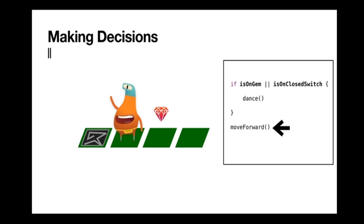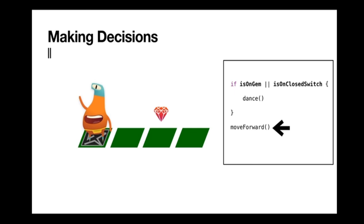Now we'll have another check — running the same conditional, imagine we're in a loop. This time isOnGem is false and isOnCloseSwitch is false, so we have no true statements. We move forward because both are false — we're not going to run our dance code. We check one last time: isOnGem is false, isOnCloseSwitch is true — so we dance. And if we happen to be on a tile that had both a close switch and a gem, since they're both true, we dance. It's only when both are false that we don't execute that code.